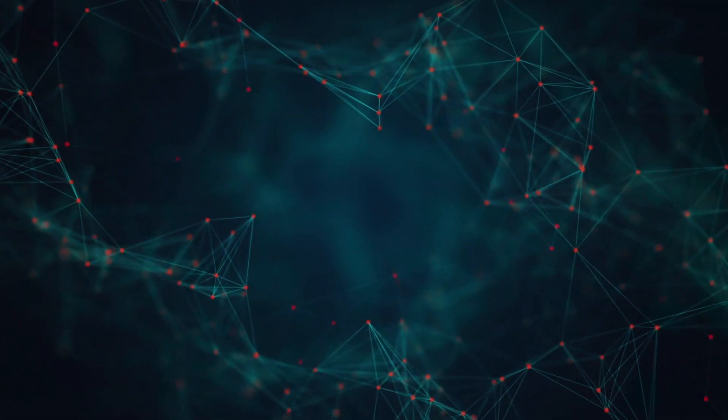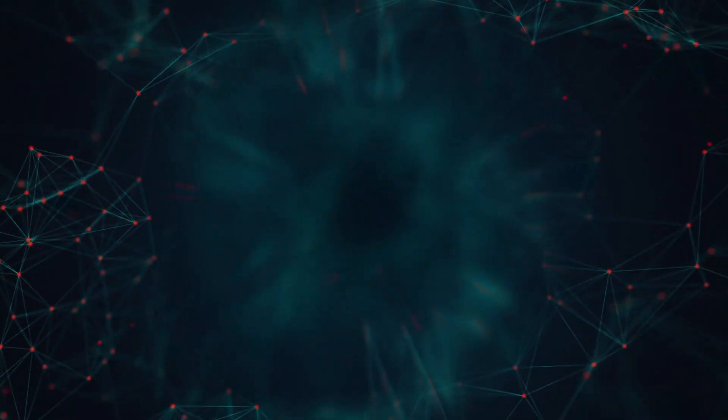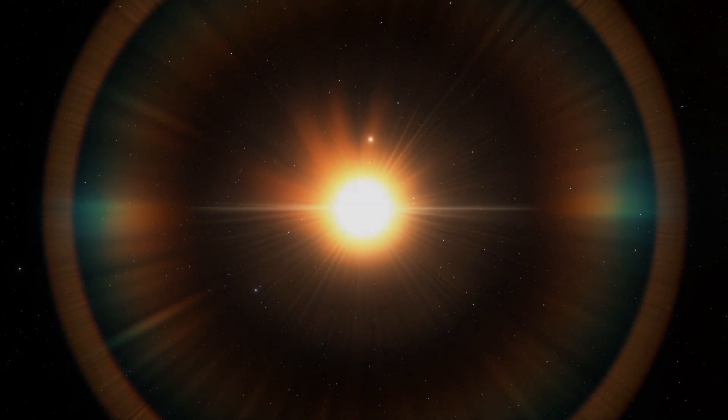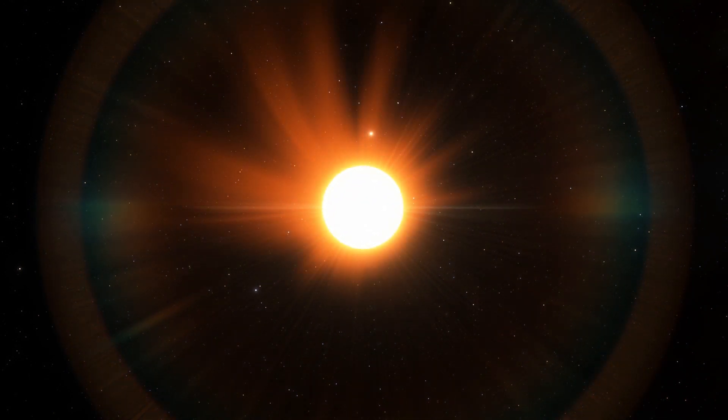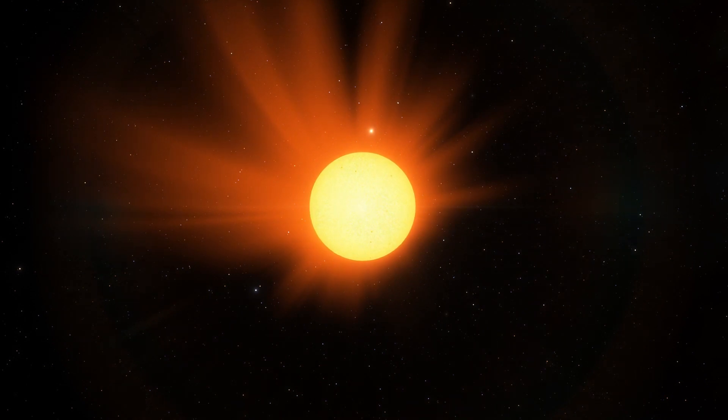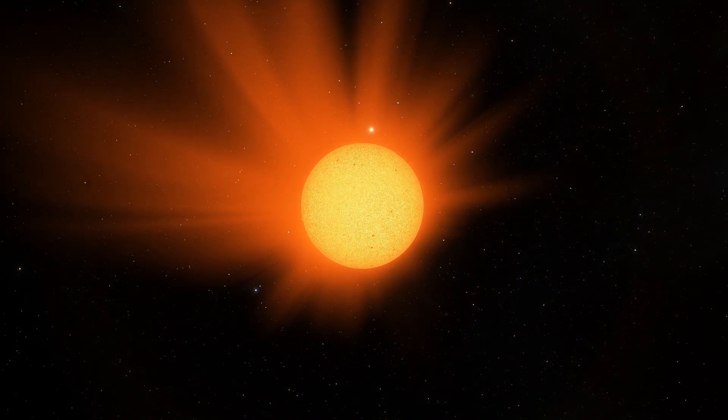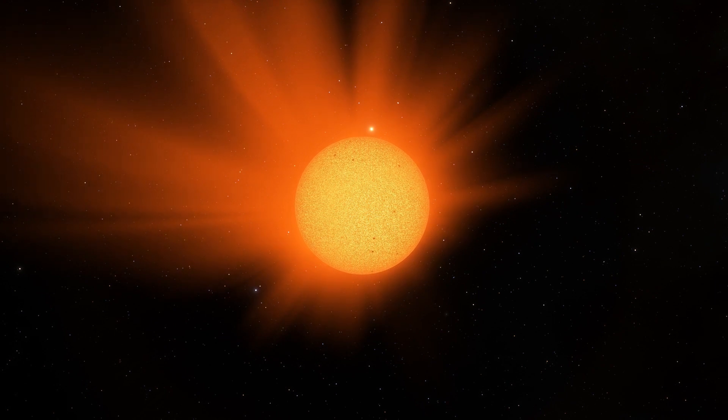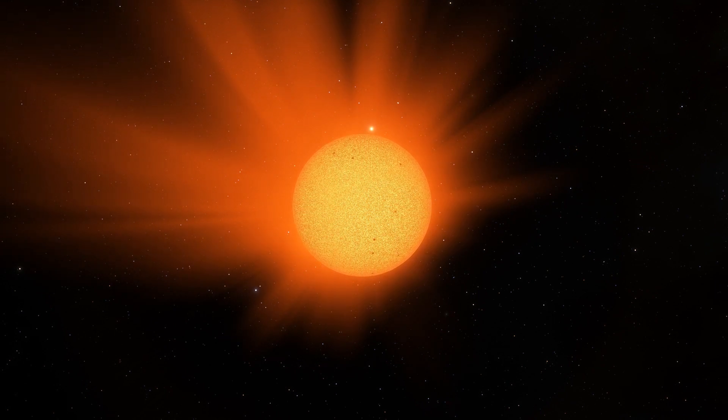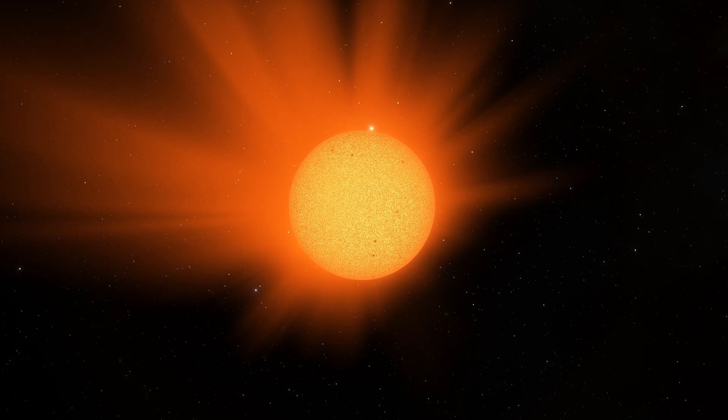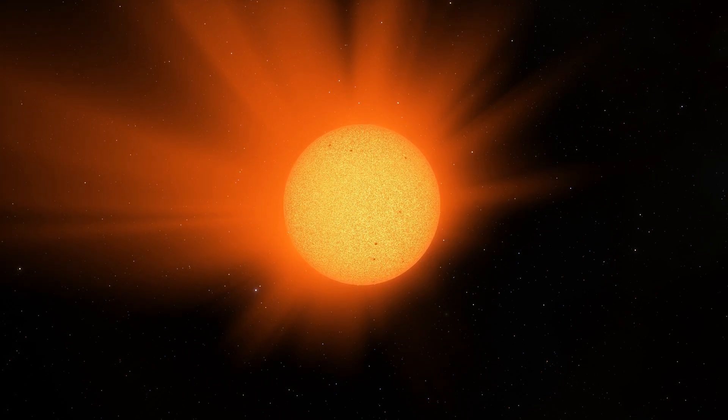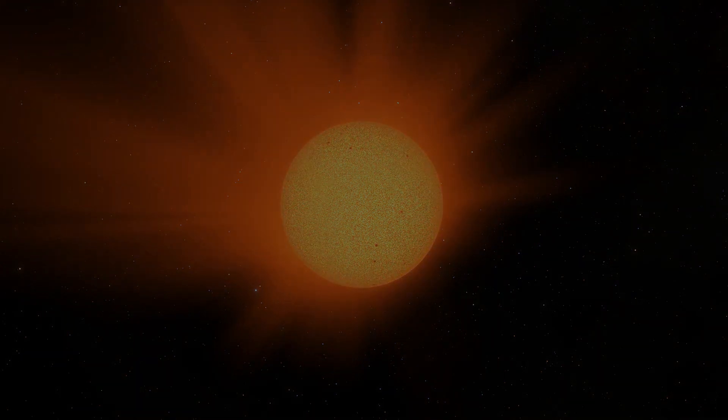Once stars are born, their lives can be quite different depending on how heavy they are. Very light stars with mass less than half that of the Sun are called red dwarfs. They barely reach critical temperature for nuclear fusion, which is inefficient and slow. Red dwarfs are not very bright, but they fuse hydrogen so slowly that they can live up to 10 trillion years, almost a thousand times longer than the current age of the universe.